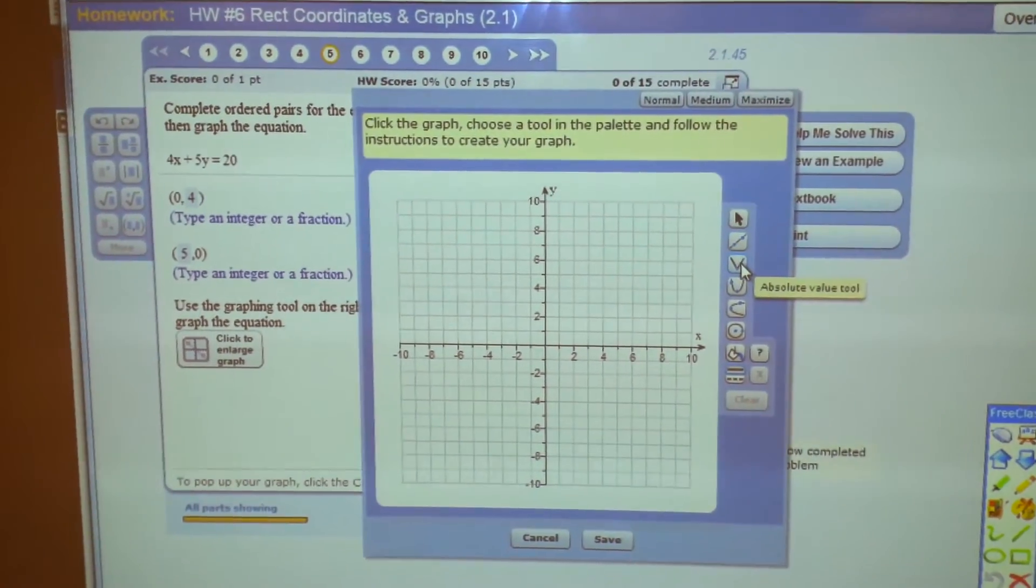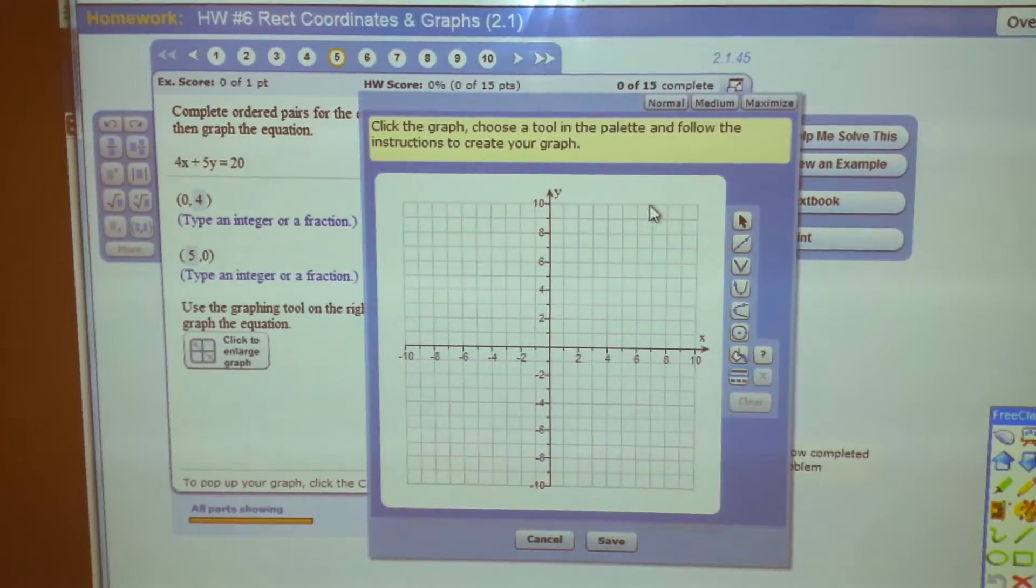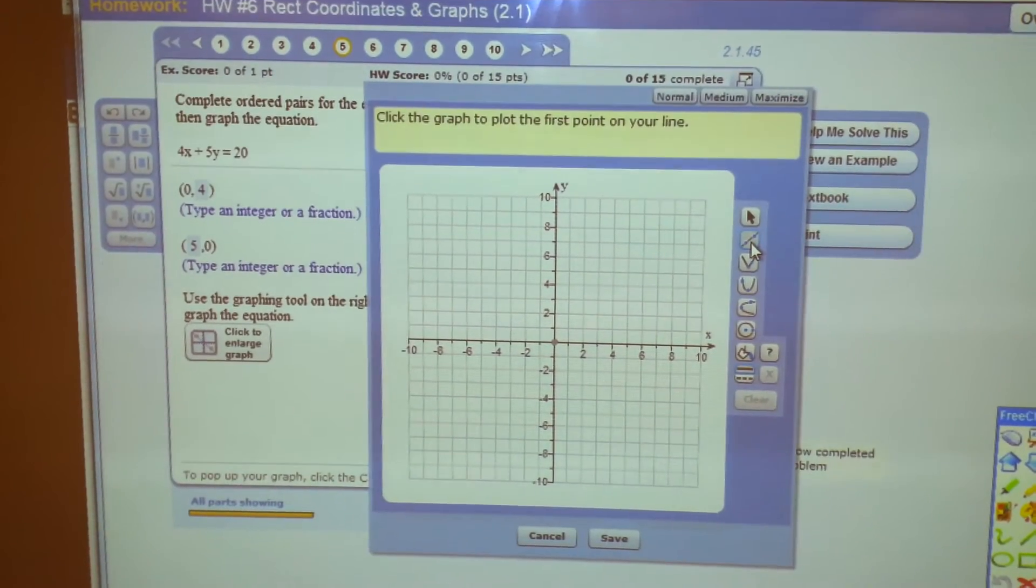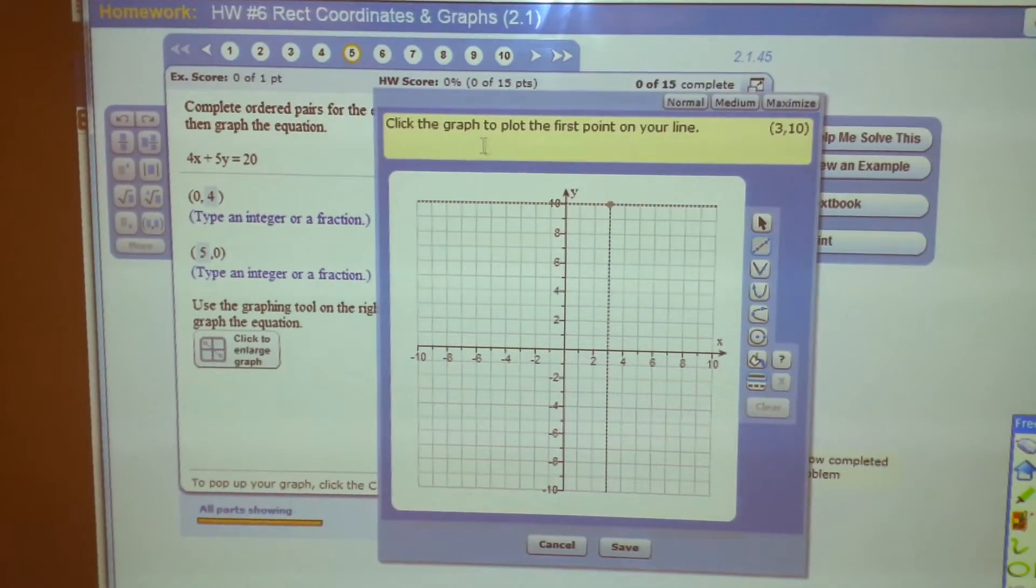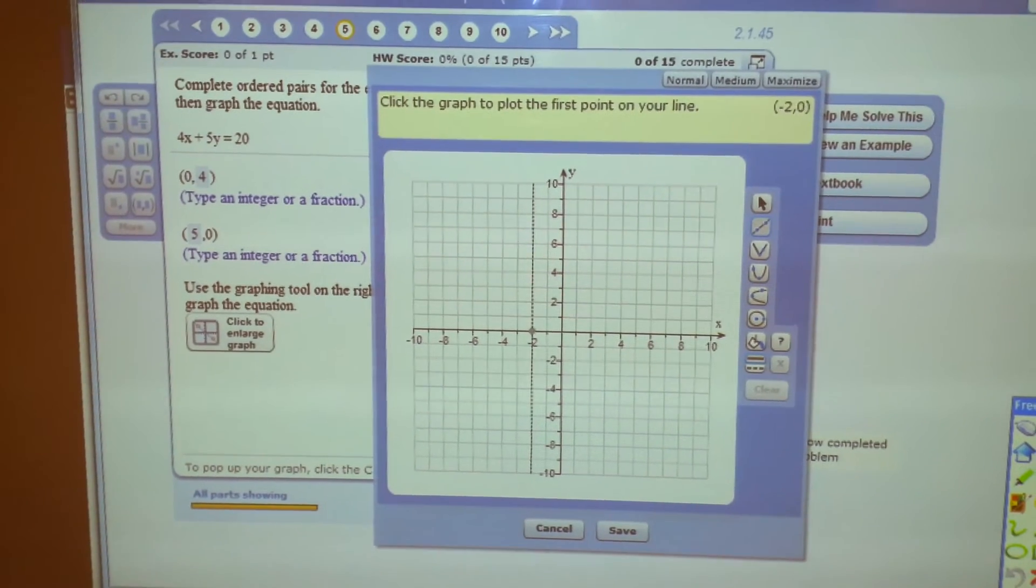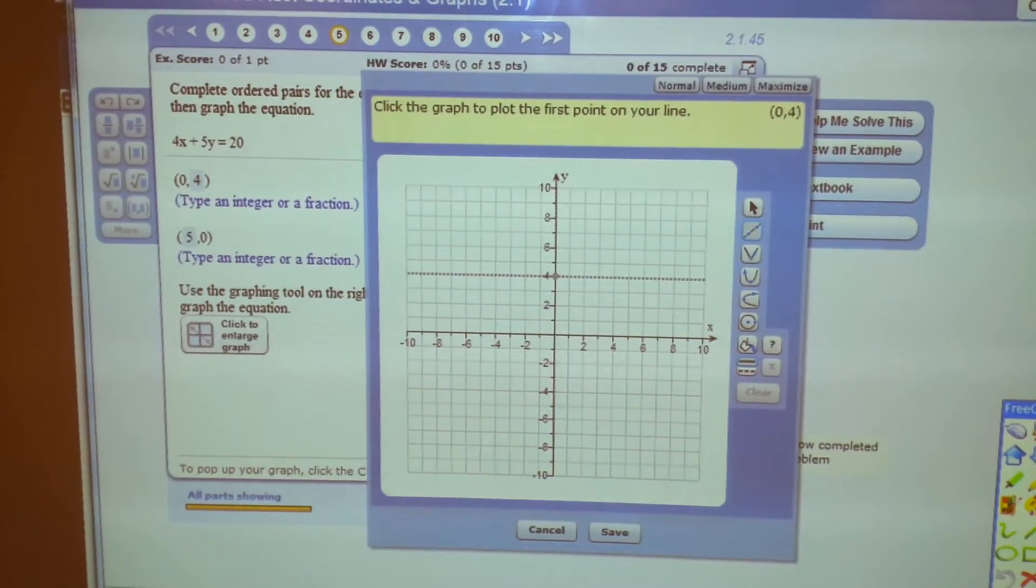Line tool, absolute value tool, and so forth. So we're going to graph a line, and it talks you through it. Plot the first point. Over zero, up four, click.